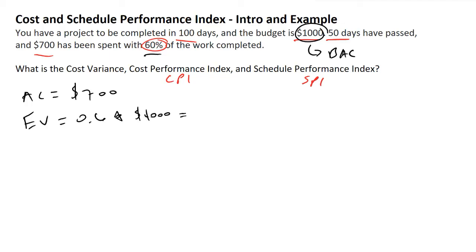And this is equivalent to $600. So basically, we've earned the company $600 in value thus far in our project.